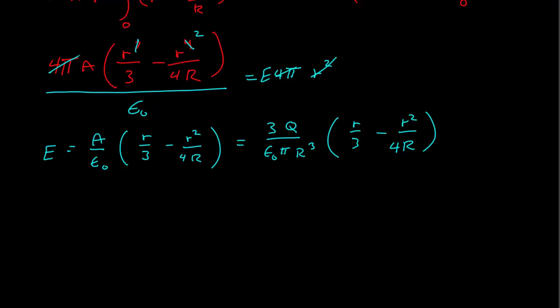And then R over 3 minus R squared over 4 capital R. And this might be good enough, we might think about simplifying that a little bit. We could multiply the 3 through, and it would cancel that one, and I'd get a 3 here.